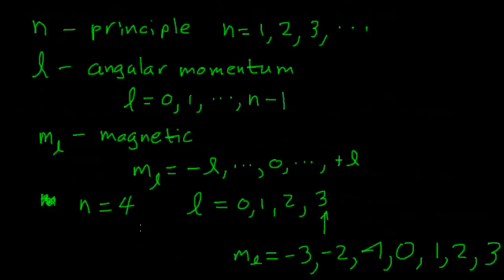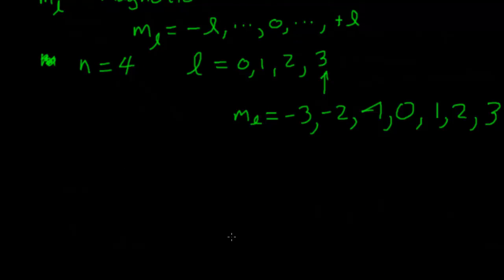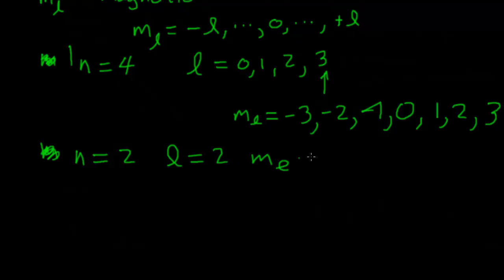Some sets of quantum numbers violate the rules. For example, if n = 2 and L = 2 and M-sub-L = −3 — that violates the rules. If n = 2, L cannot be 2; L can only be 0 or 1. Similarly, M-sub-L cannot be −3 because it must be bounded by L — it can't be bigger or smaller in magnitude than the L value. Those are our quantum number rules.